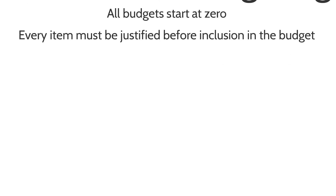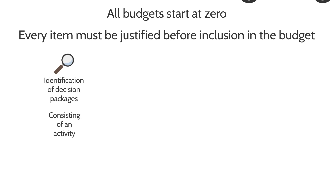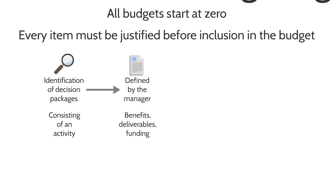The method of zero-based budgeting works as follows. Every single item is prepared and proposed — this is known as a decision package. Essentially, a particular activity needs to be brought forward to the budget setters, usually by a manager, and it will include all the benefits of the activity and the resources required for it.